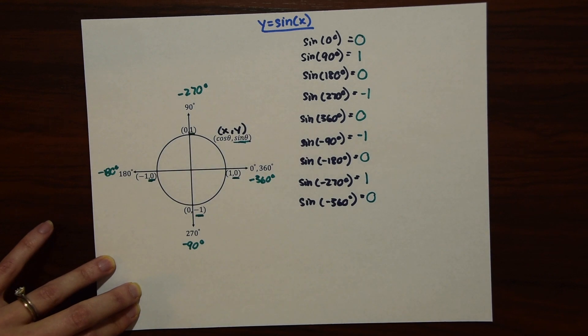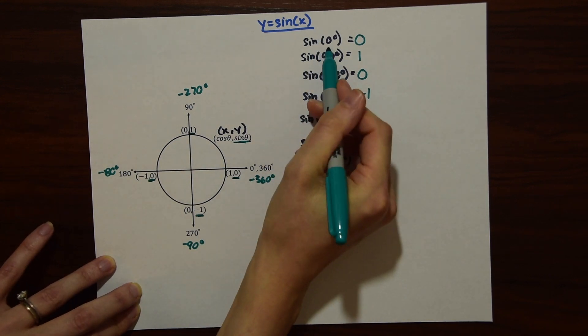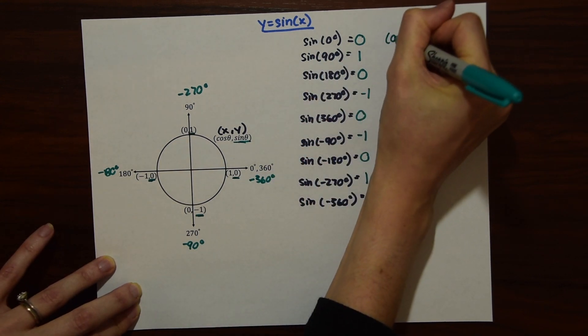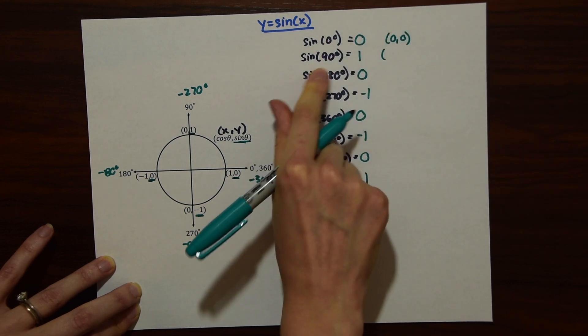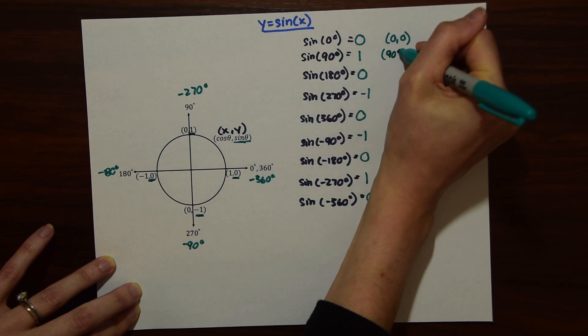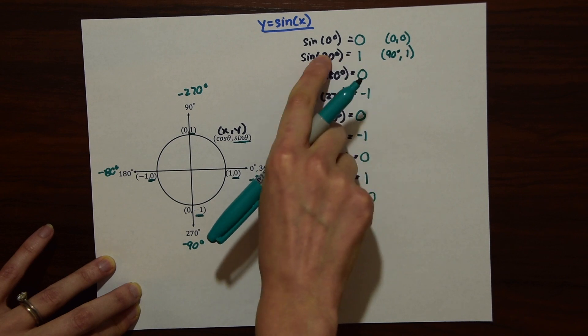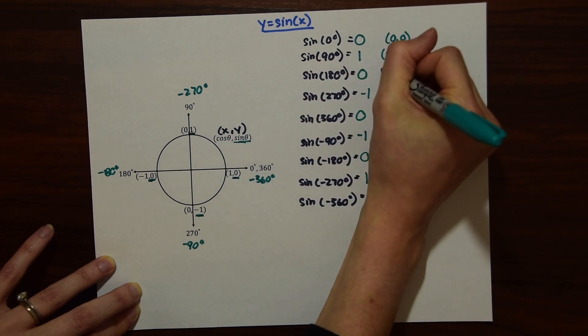So now let's write out our coordinates. We have (0, 0), (90°, 1). We're just pairing these together and these are our coordinates.